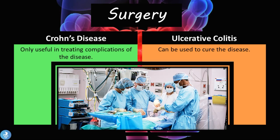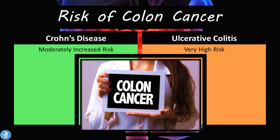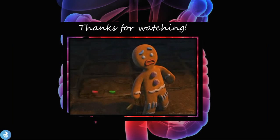As you can see, both these diseases can be highly debilitating. Regarding surgery: in Crohn's disease surgery is only useful in treating the complications of the disease, while in ulcerative colitis surgery can be used to cure the disease. The risk of colon cancer in Crohn's disease is moderately increased, while in ulcerative colitis there is a very high risk.